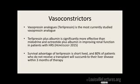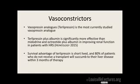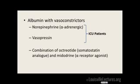Why don't we use terlipressin in the US ICU? It causes ischemia — MIs, gut ischemia — so the FDA decided not to approve it. Here in the ICU, you give either norepinephrine with albumin or vasopressin with albumin. The goal is to get their blood pressure at least 20 points above their mean — if they're at 60, titrate up the norepinephrine to get means in the 80s. This is all in the setting of stopping diuretics.